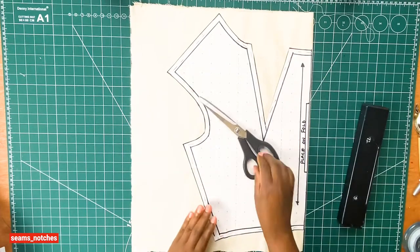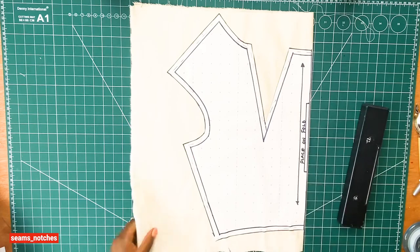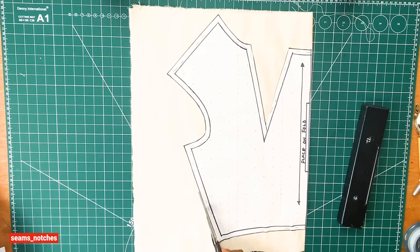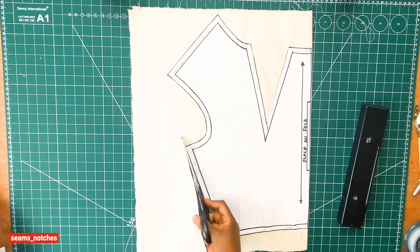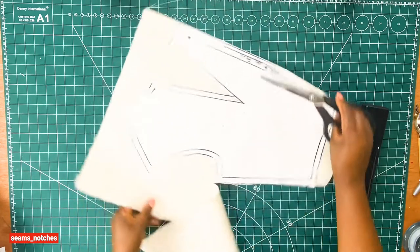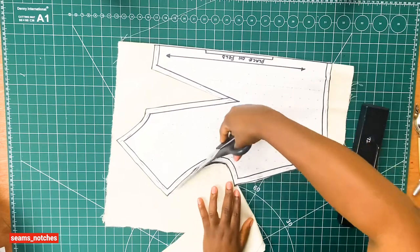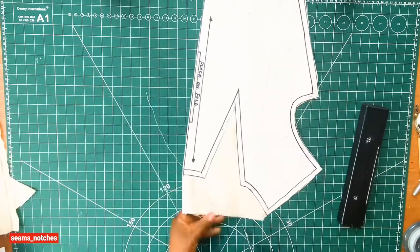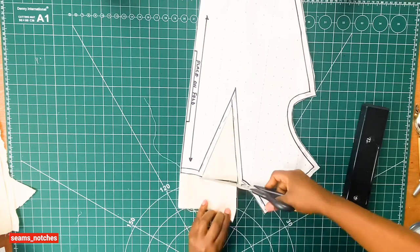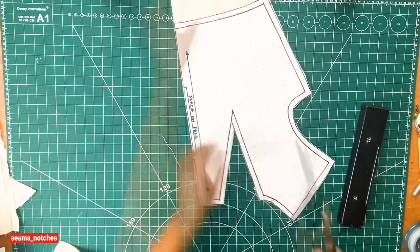Once my pattern is all pinned in, I am going to get my fabric scissors to cut out my new pattern. As we've said in our previous videos, make sure you use different scissors for different functions. We are using our fabric scissors because we are cutting into our fabric, as opposed to our paper scissors.